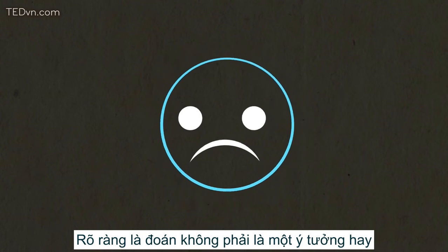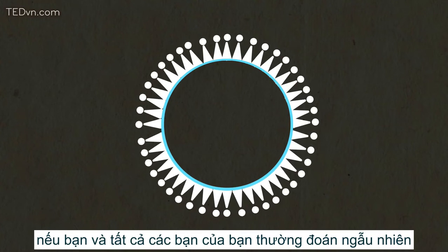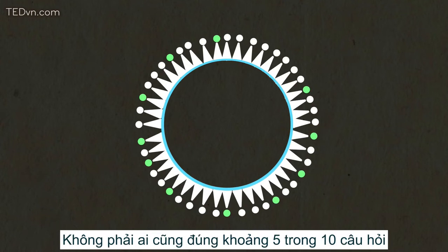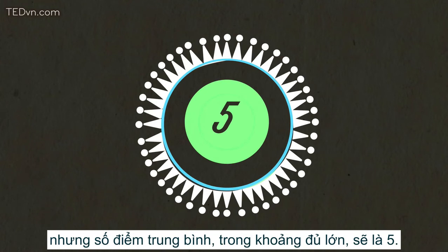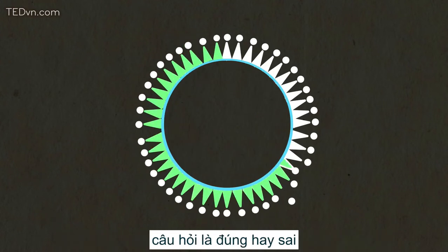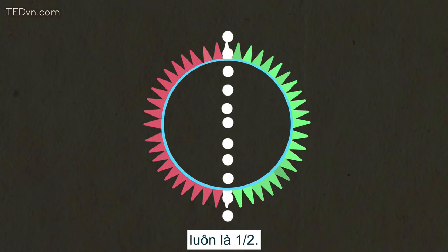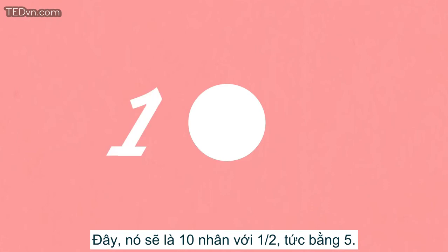Clearly, guessing isn't a good idea. What would be the most common score if you and all your friends were to always randomly guess at every question on a 10-question true-false quiz? Well, not everyone would get exactly 5 out of 10, but the average score in the long run would be 5. In a situation like this, there are two possible outcomes — a question is right or wrong — and the probability of being right by guessing is always the same: 1 half. To find the average number you would get right by guessing, you multiply the number of questions by the probability of getting the question right. Here, that is 10 times 1 half, or 5.